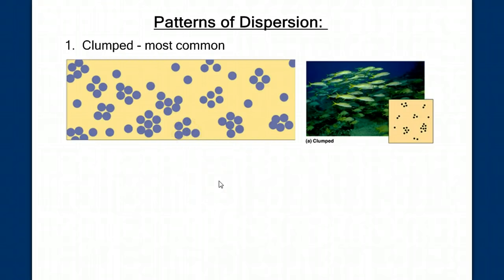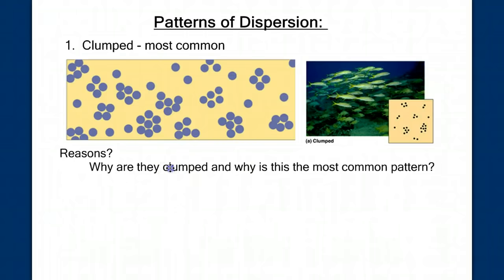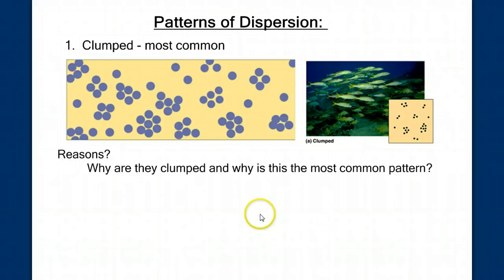The question is twofold. Why are they clumped in these clusters? And why is this the most common pattern? Take a minute to consider these questions. Stop the video and write down a few reasons why you think that clumped would be the most common pattern of dispersion of organisms within an environment and what's the cause of this clumping.